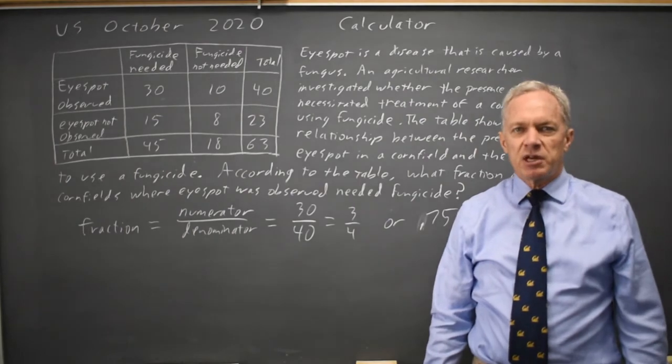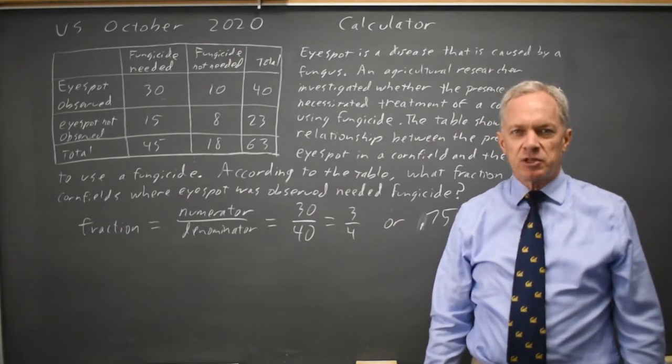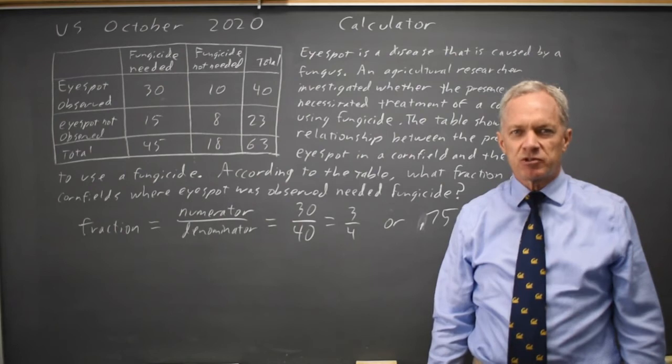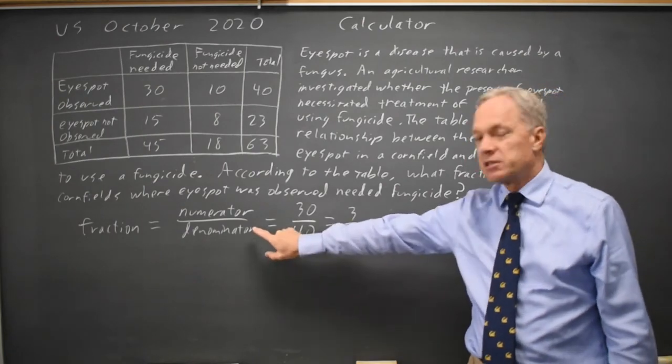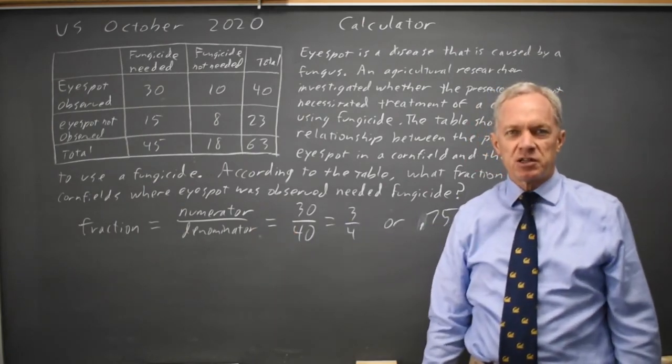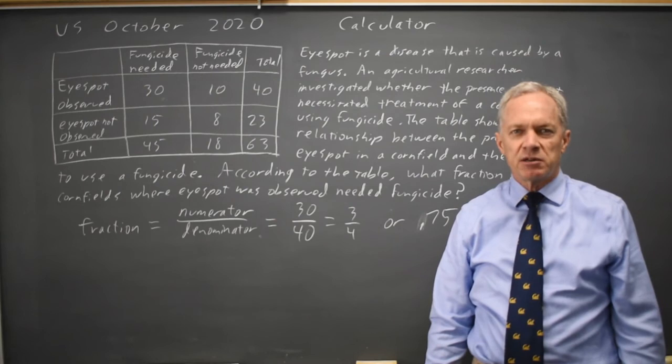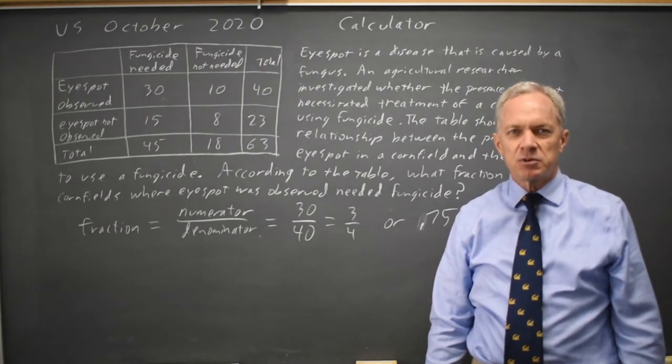And you should be ready for questions with two-way tables where they ask for a probability or percent or fraction, and they may want one or more rows, one or more columns, or the entire table for your denominator. And once you've found that denominator, the numerator is of those individuals, which ones are they asking for and treating as a success.